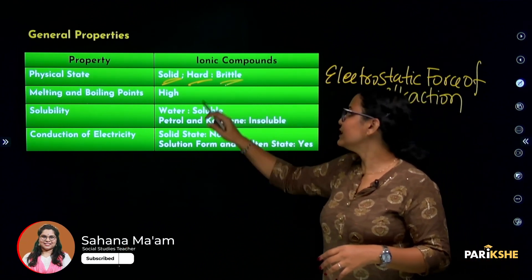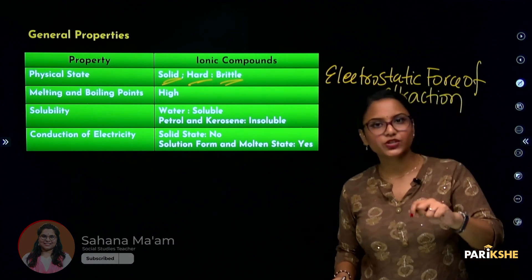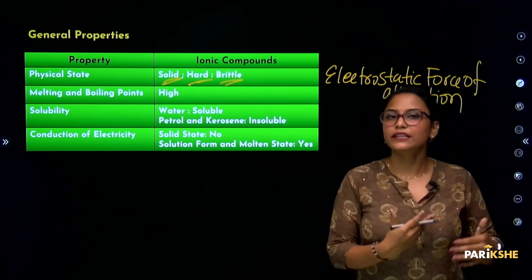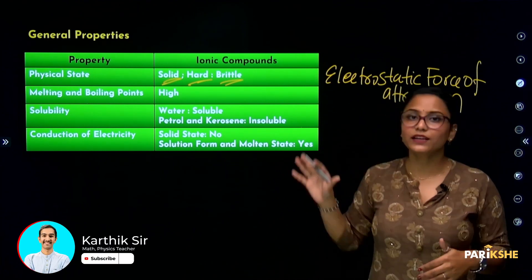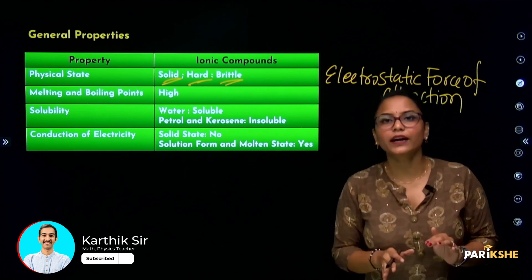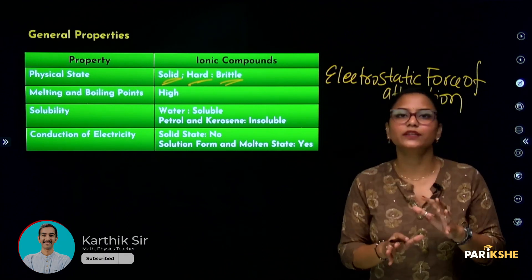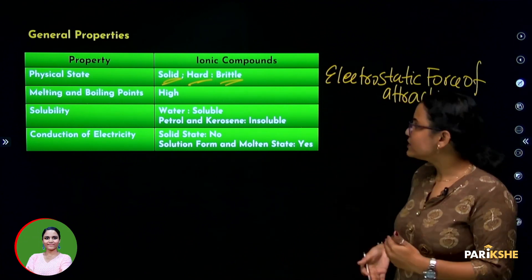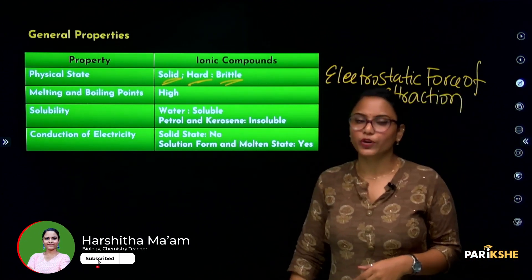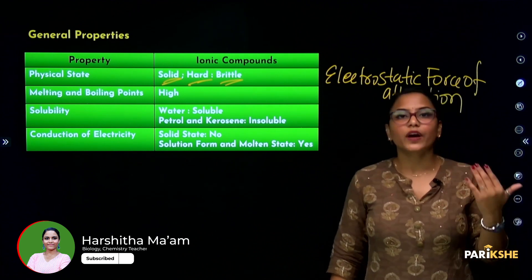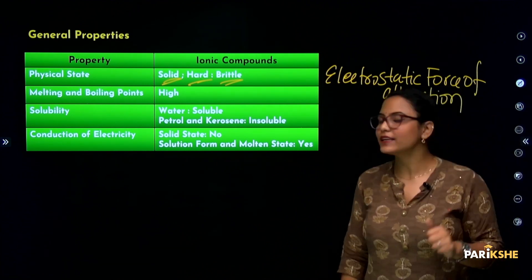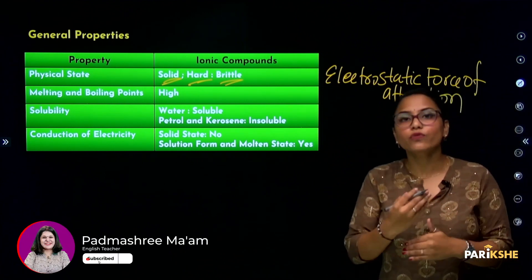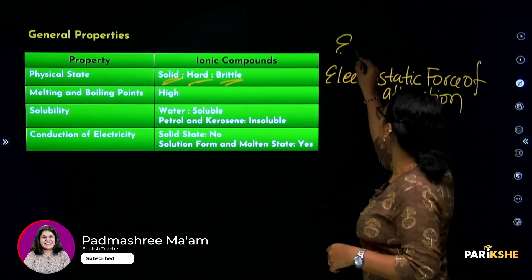Ionic compounds are also brittle in nature — they are brittle when pressure is applied on them. So for the physical state: ionic compounds are solid, hard, and brittle. Next is melting and boiling point. The melting and boiling points of ionic compounds are pretty high.